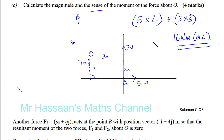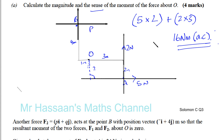The force acting at B is pi + qj, so the horizontal component is p and the vertical component is q. The condition is that the resultant moment of the two forces F1 and F2 about O is zero.